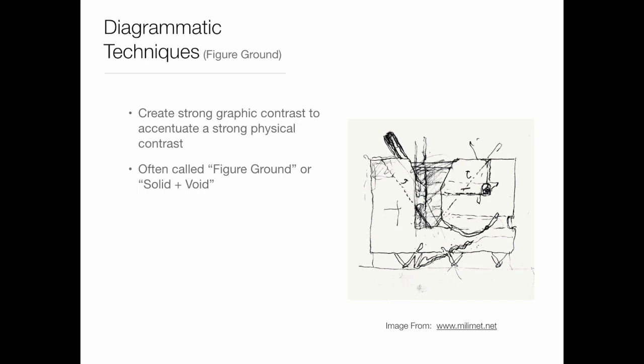We'll start with figure ground, which I think is one of the very common ones. It's an old technique that still rings true today and is very easy to use. It's essentially a way of creating a strong graphic contrast in your diagram — one thing is dark, one thing is light — and that represents or accentuates a strong physical contrast in the building you're designing. Something is public, something is private. It's called a figure ground or a solid and void diagram.